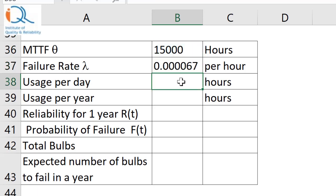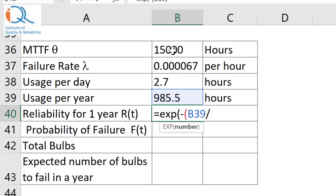Usage per day is 2.7 hours per day. Usage per year will be 365 into 2.7 and reliability for one year will be exponential of minus 985.5 divided by 15,000 that is MTTF and that is 0.936.